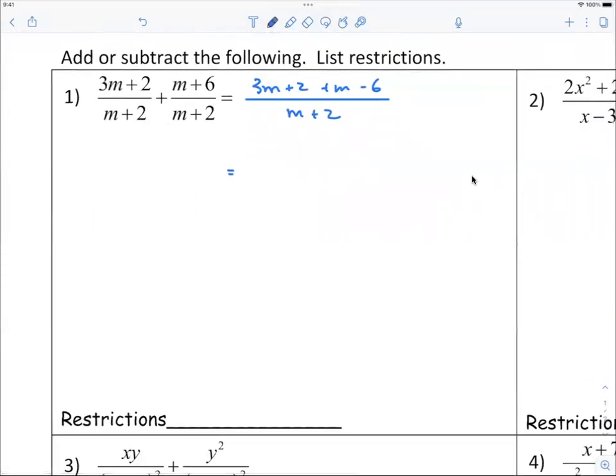By the way, since we have the denominator ready, we can just go ahead and write down the restriction, which is what number could make the denominator 0. And we're interested in that because we do not want the denominator to become 0.